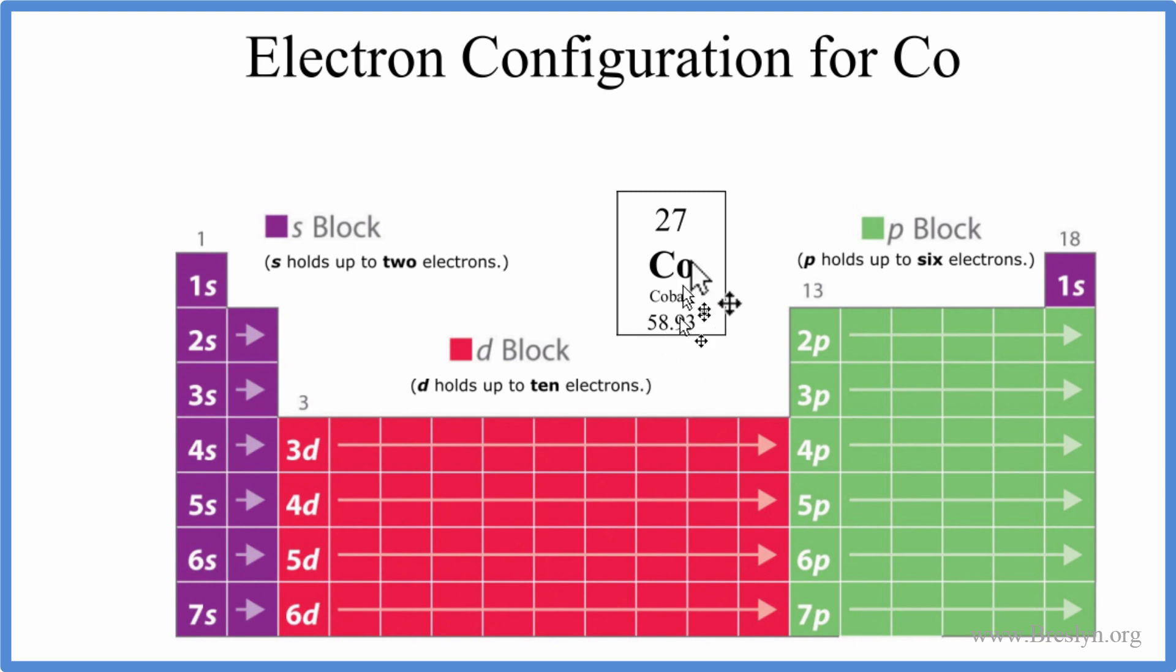So for cobalt, we have 27 protons, 27 electrons, and we'll use those to write the electronic configuration for CO. We'll use this periodic table here, broken up into orbital blocks, to write the electron configuration. You can also use this chart up here, there's a link in the description for this video that explains how to do that. I think this is probably a better way to do it, so let's try it using the periodic table.